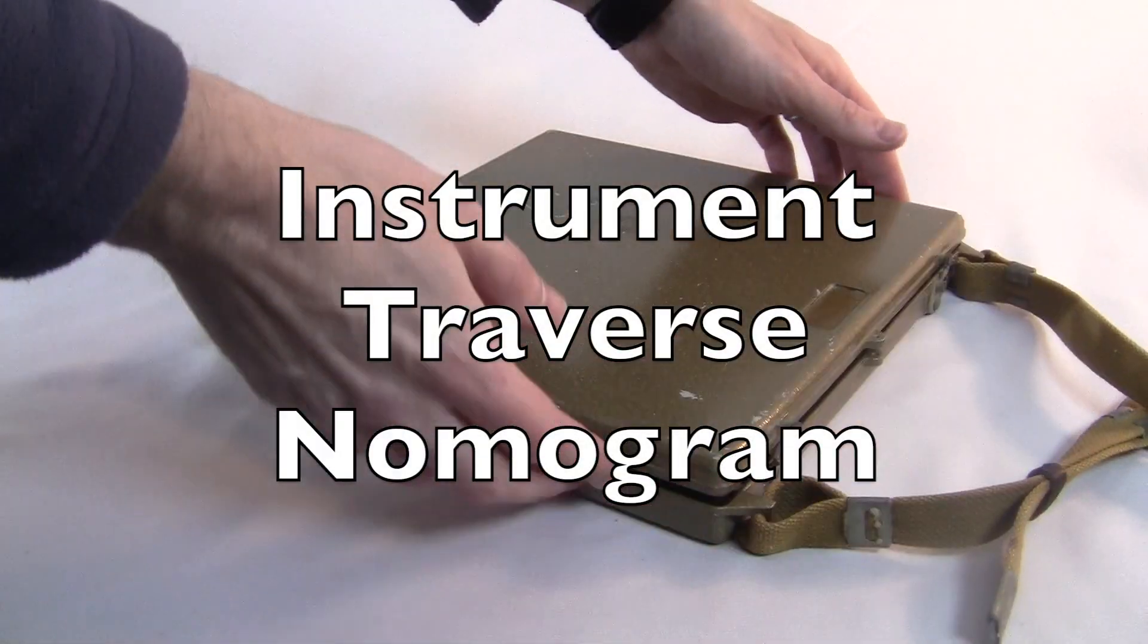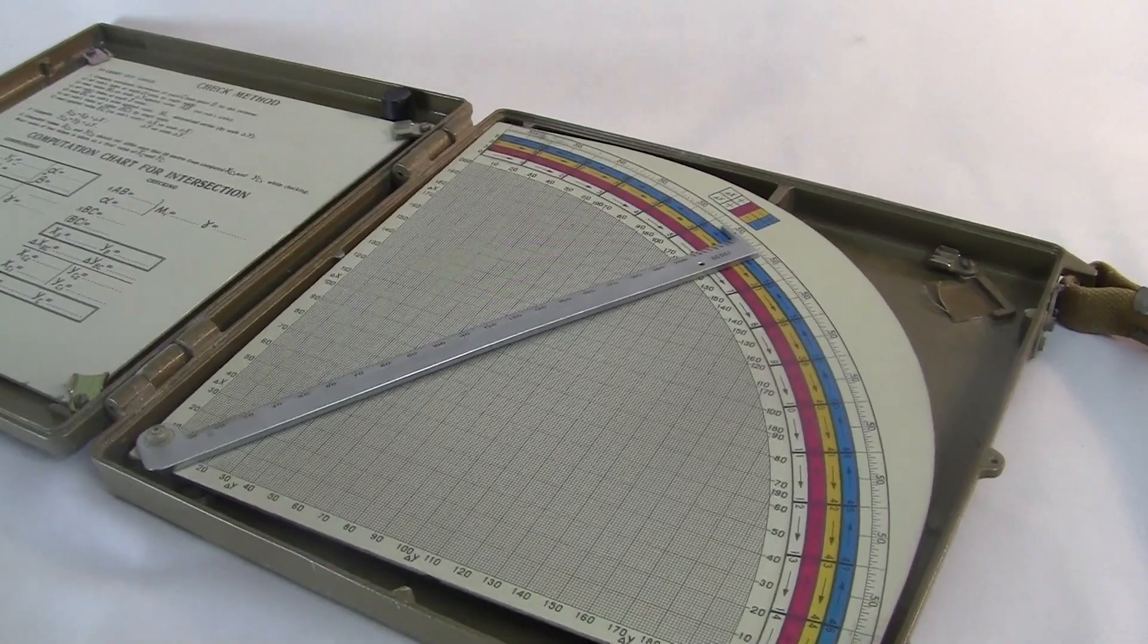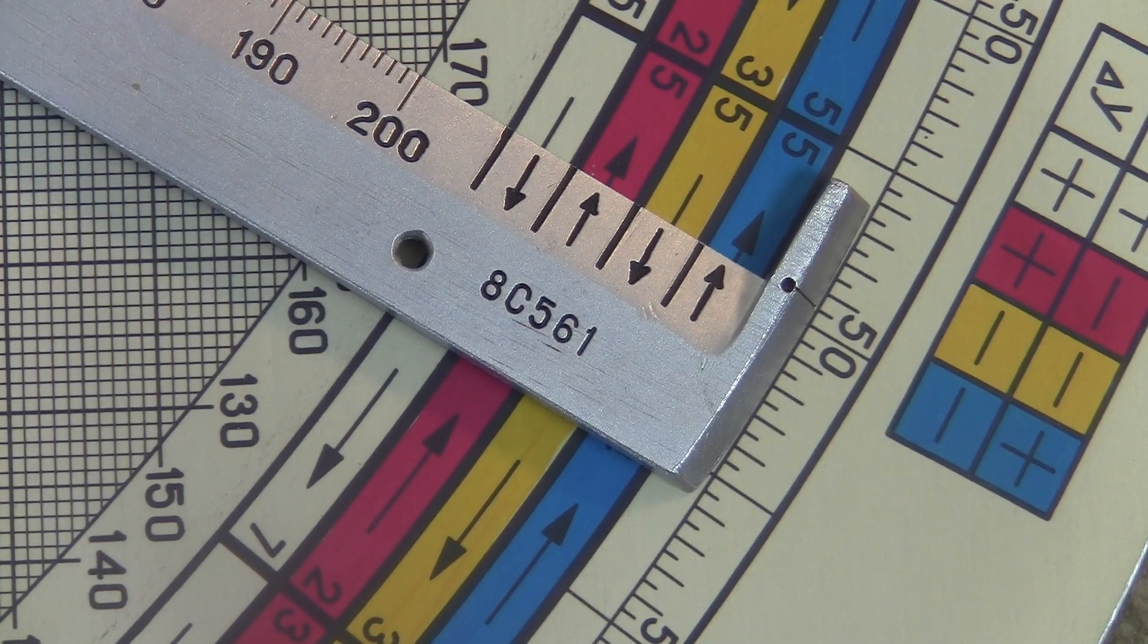This is the Instrument Traverse Nomogram. It's a piece of Soviet military equipment that can do all kinds of stuff.